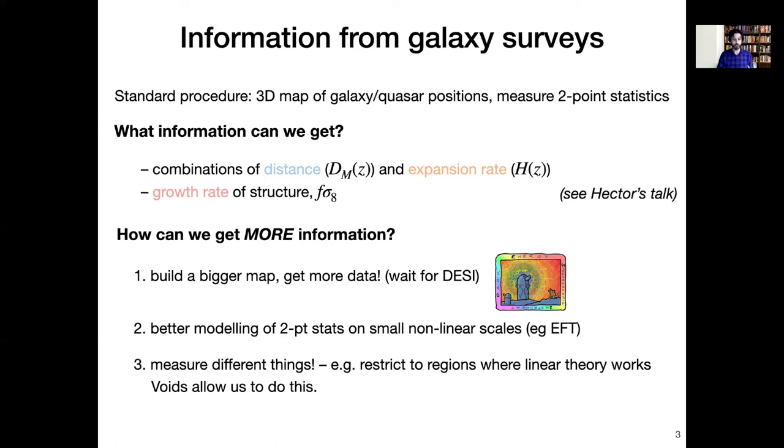But how can we go beyond this and get more information? Well, the first obvious option is that we just collect a lot more data, and this means building a bigger telescope, surveying for longer, better spectrographs, etc. In practical terms, we're going to get this very soon from DESI, which will have a much larger volume of data than we have from eBOSS. But in the meantime, we could also work at a better modeling of the data that we have, and one approach to do this is to improve the modeling of two-point statistics by pushing to smaller non-linear scales, and that's the EFT approach described in a couple of other talks at this conference.